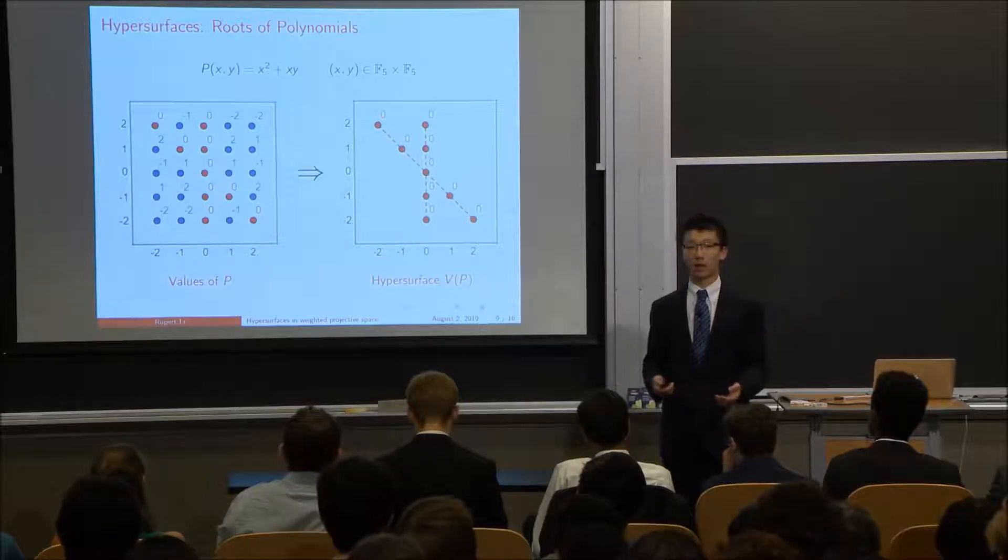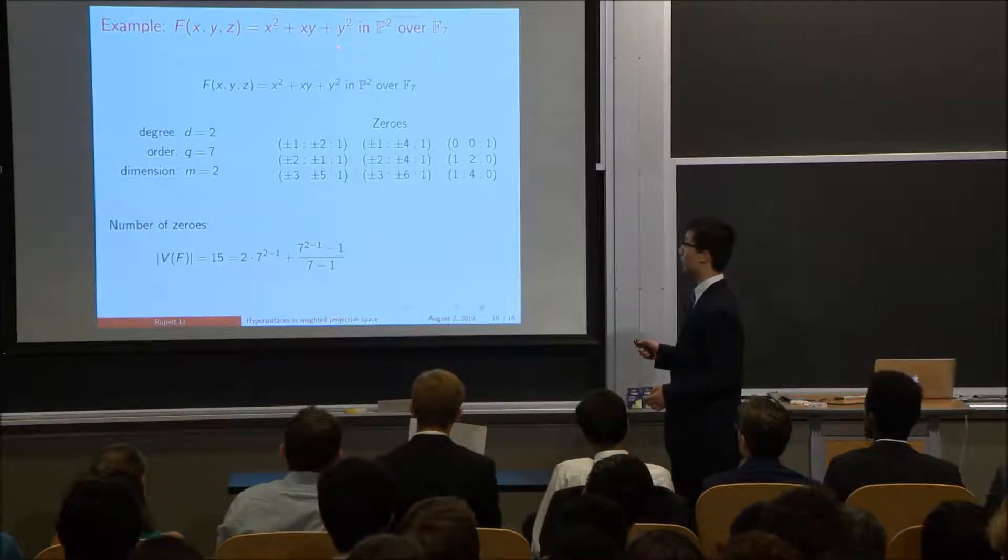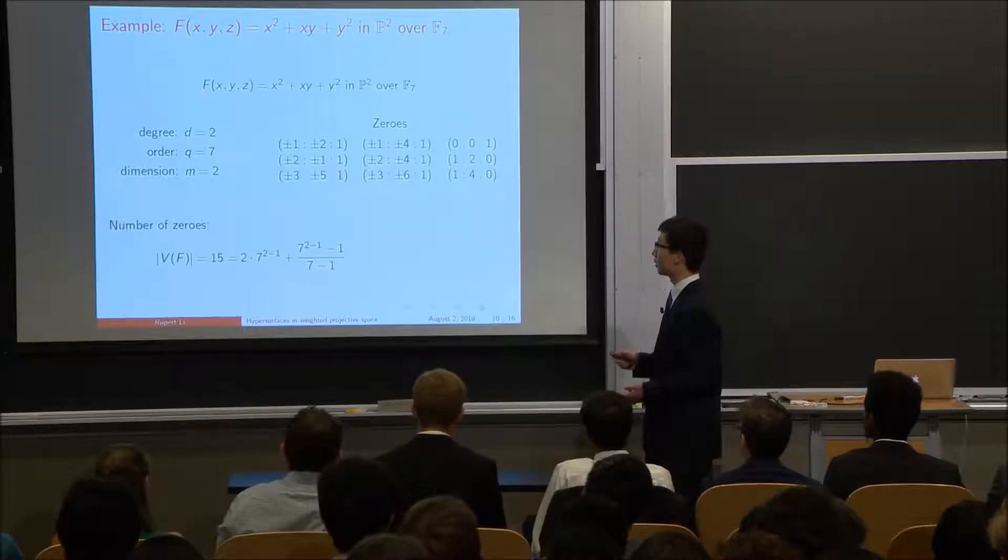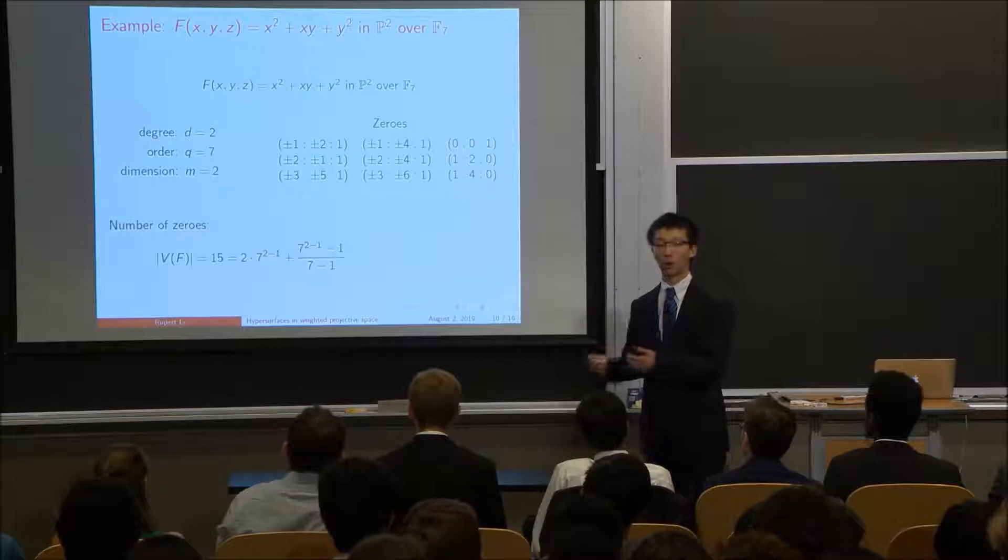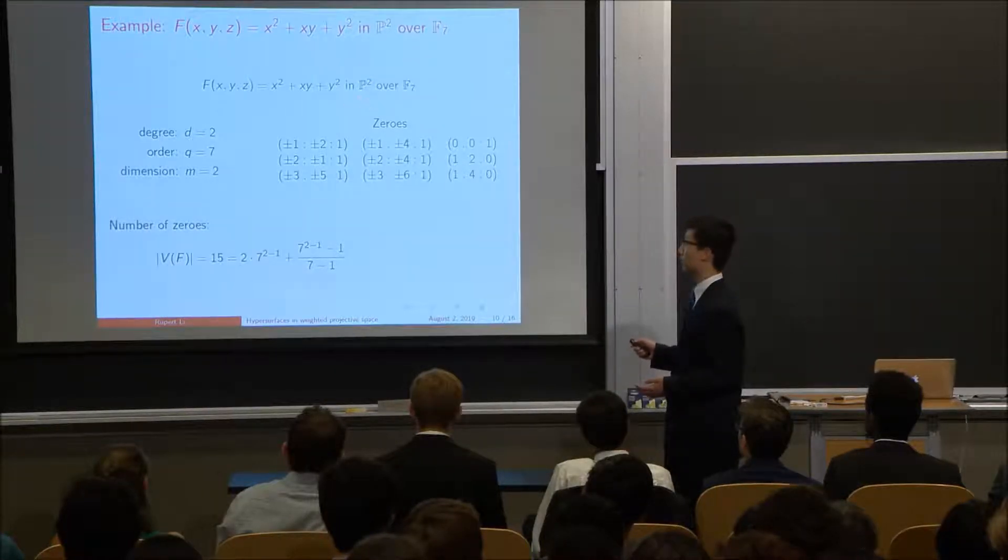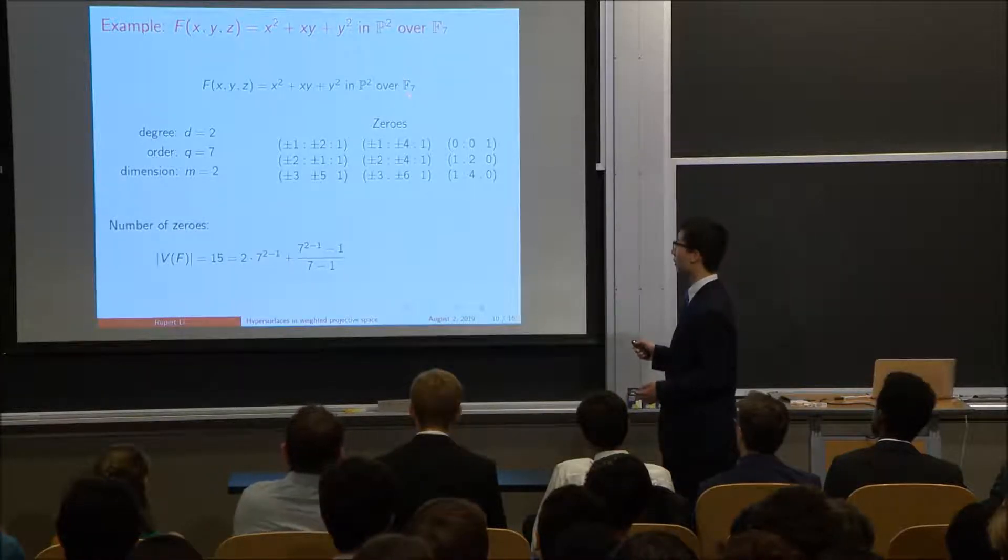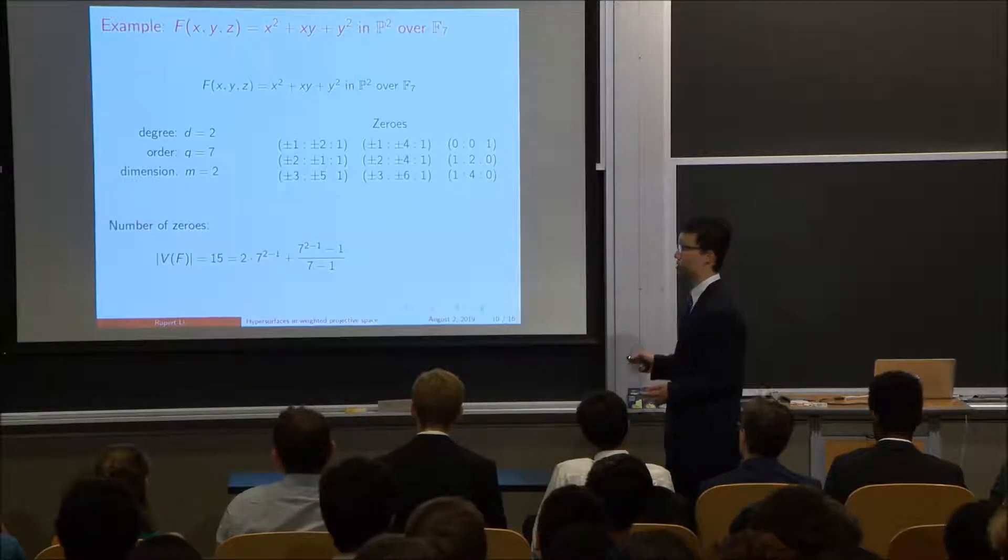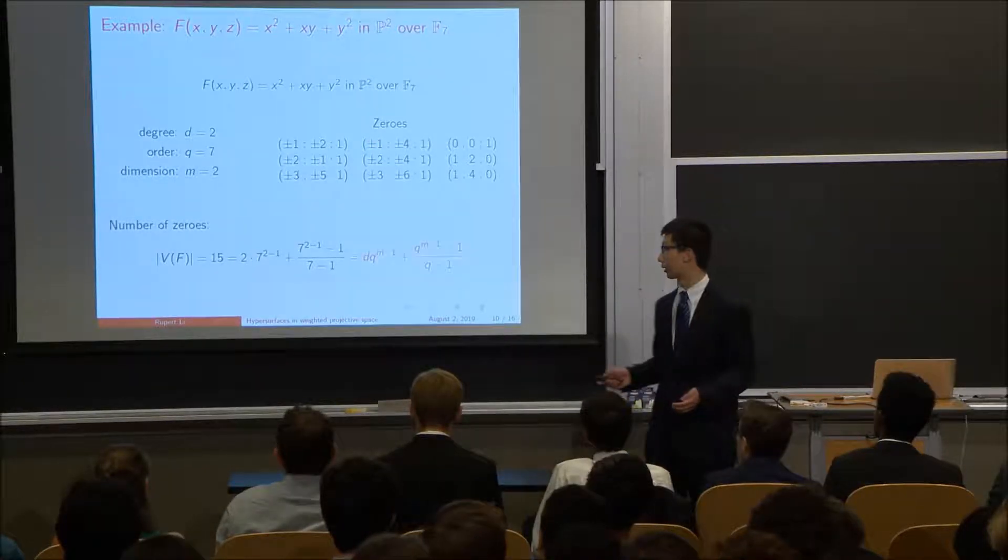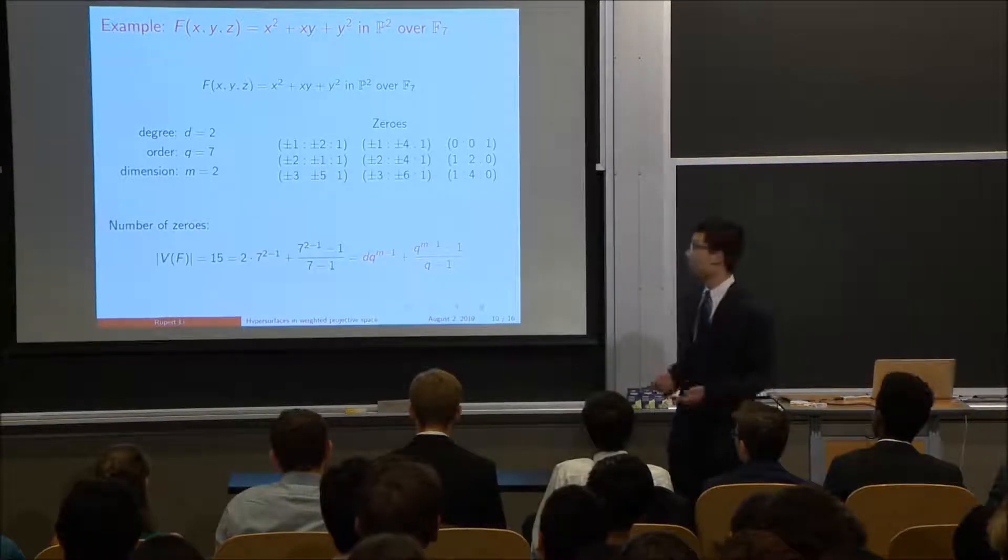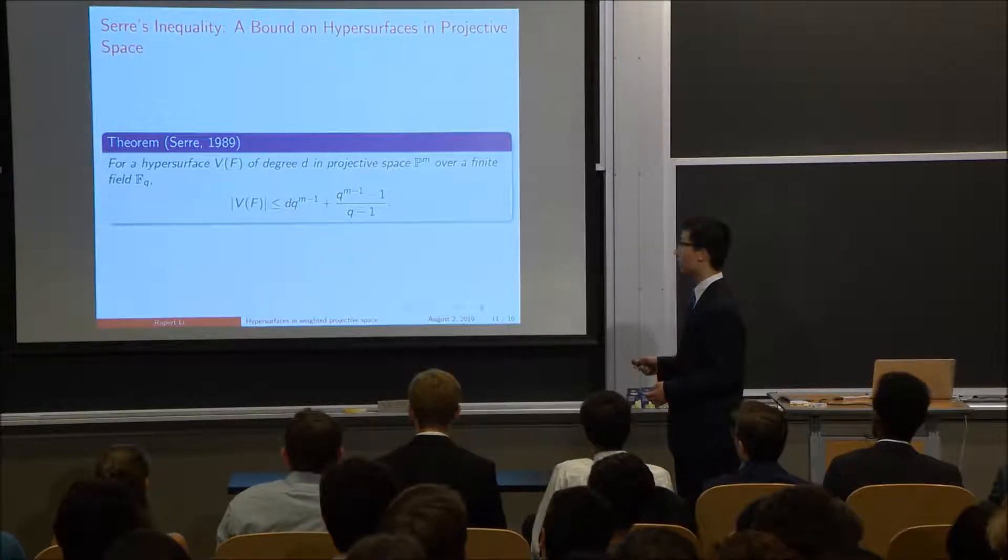So let's take a look at an example for how many points can actually lie on a hypersurface. So if I have this example polynomial here, f of x, y, z, where that's defined as x squared plus xy plus y squared. So actually, the variable z isn't in this equation, but I'll still say it's in the polynomial. And because we have three variables, that means three coordinates. And as I explained before, we always have one more coordinate than we have dimension. So that's why we're in two dimensional projective space. And I'll say it's over the finite field with seven elements. So this is a degree two equation, because it's a quadratic equation. We have order seven, because we have seven elements in our field. And our dimension is two, because we're in two dimensional projective space. So these are our zeros, and there are 15 of them. If you write it in this form, we can actually express them in terms of d, q, and m like this. That turns out to be the maximum that you can have. So the maximum number of solutions you can have to a polynomial. And that was proven in 1989 by Jean-Pierre Serre. And so this inequality just shows that the number of solutions must be no more than this number.